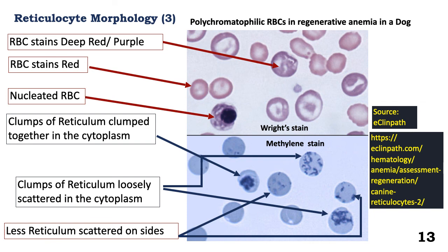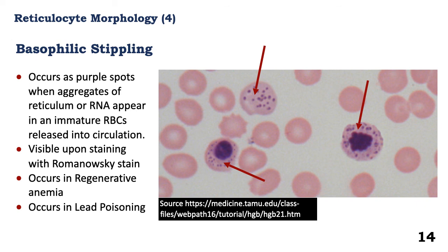These are the reticulocytes that are counted during enumeration. Basophilic stippling is another morphology of reticulocytes — these are spots or aggregates of reticulum that stain basophilic with Romanowsky stains, and their occurrence indicates regenerative anemia, or it might be due to lead poisoning.